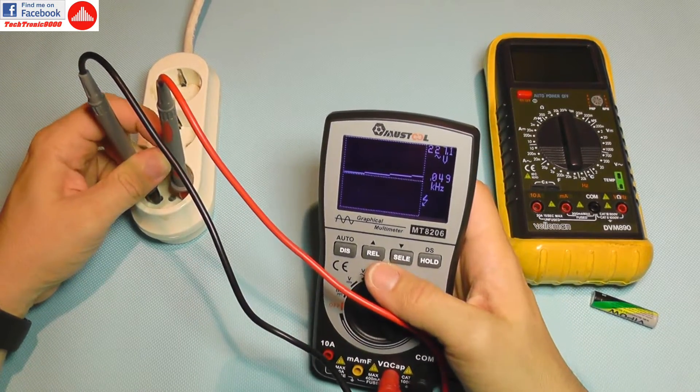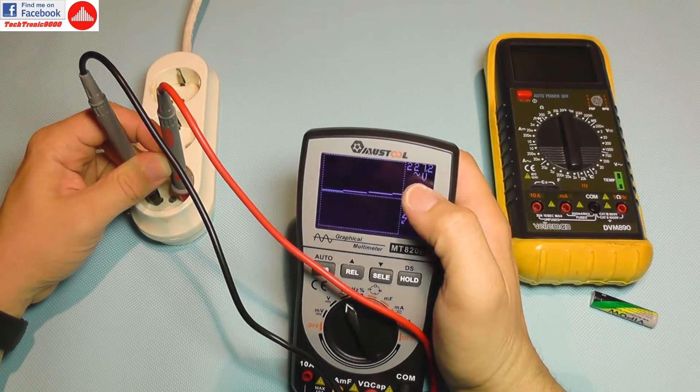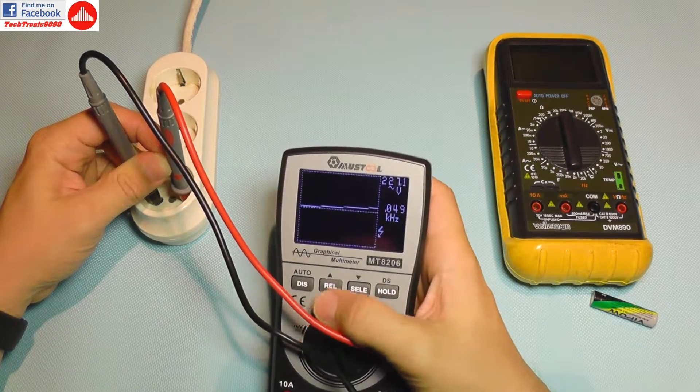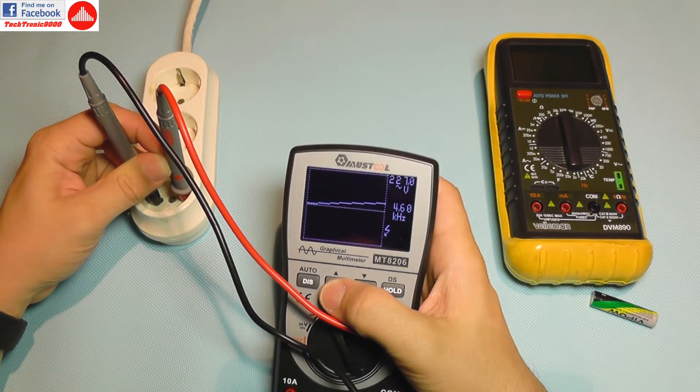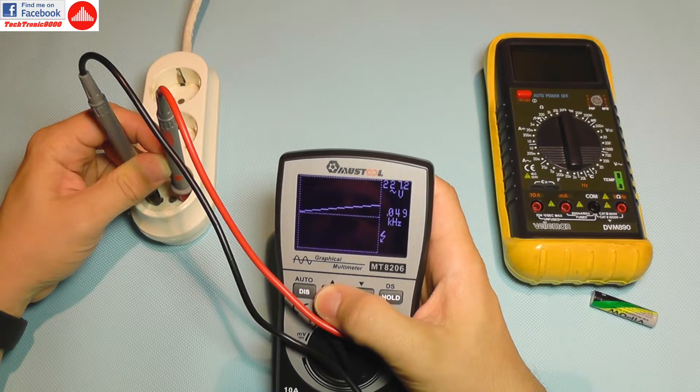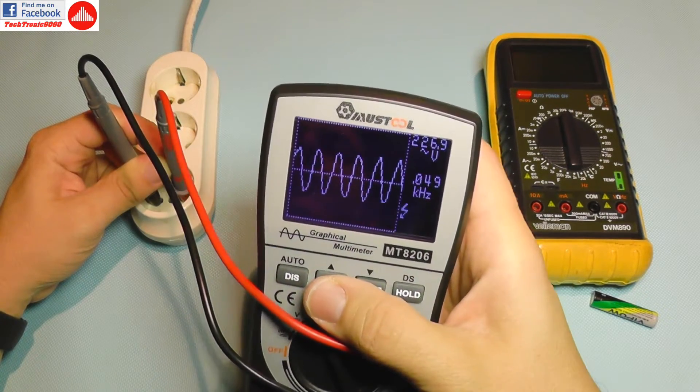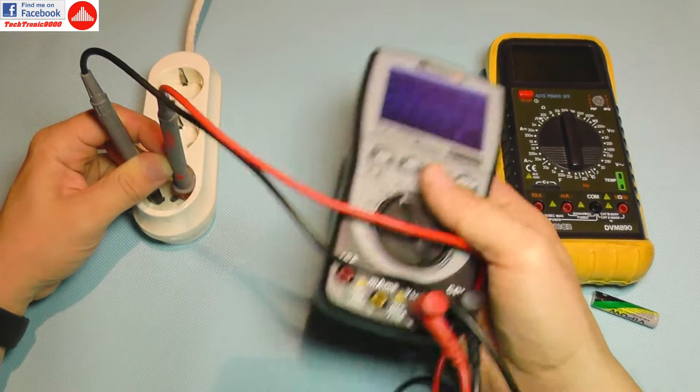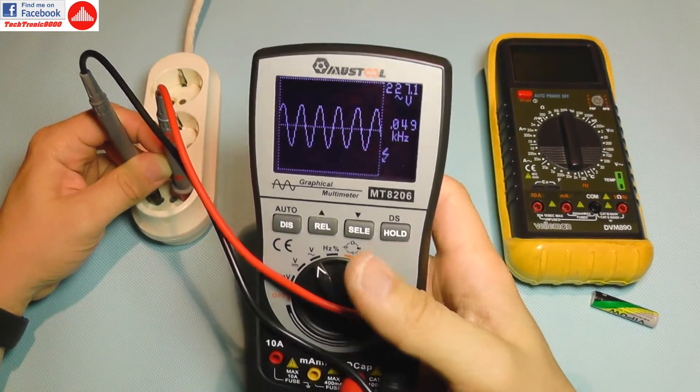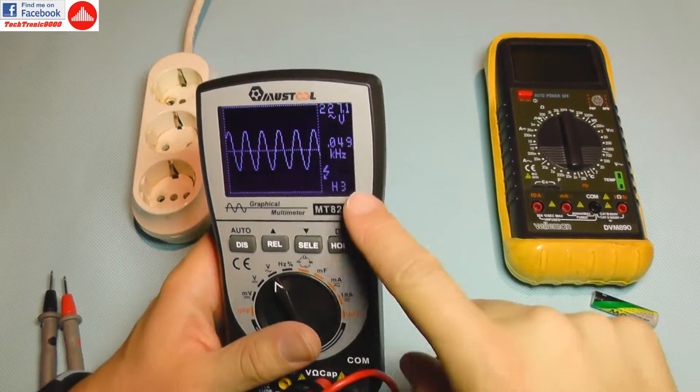It shows voltage frequency, 49 Hertz, and voltage 227. And with these two buttons I can adjust the scale if I want to, and there you go.